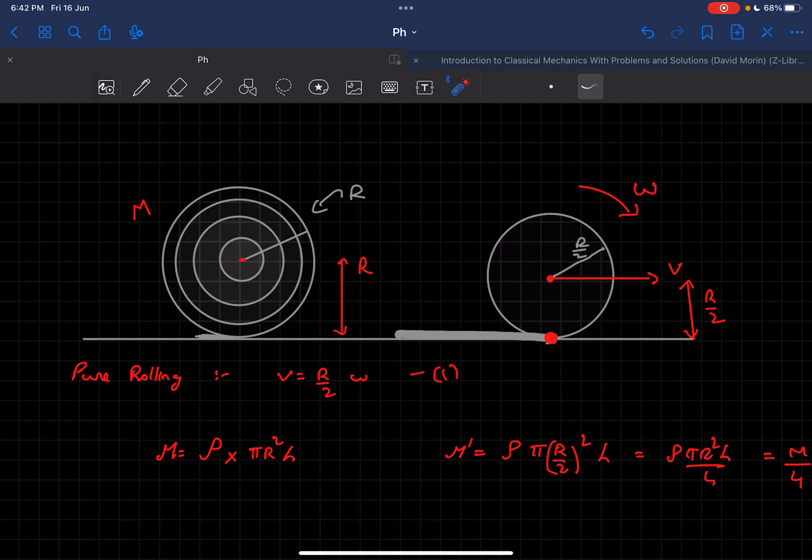We know the work done by static friction would be zero. Only in the case of kinetic friction will there be heat losses. Static friction does no work, so we can consider the work done by static friction to be zero, which means we can conserve the energy in this case.